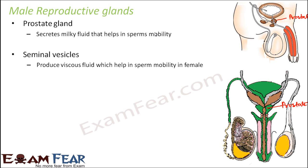The seminal vesicles produce a viscous fluid which helps in sperm mobility inside the female. These are present in males — the brown colored structures you can see are the seminal vesicles. These glands secrete a slightly viscous fluid. The sperms move out of the penis and inside the body of the female, and that mobility inside the female's body is provided by this viscous fluid. The seminal vesicles exist in pairs.